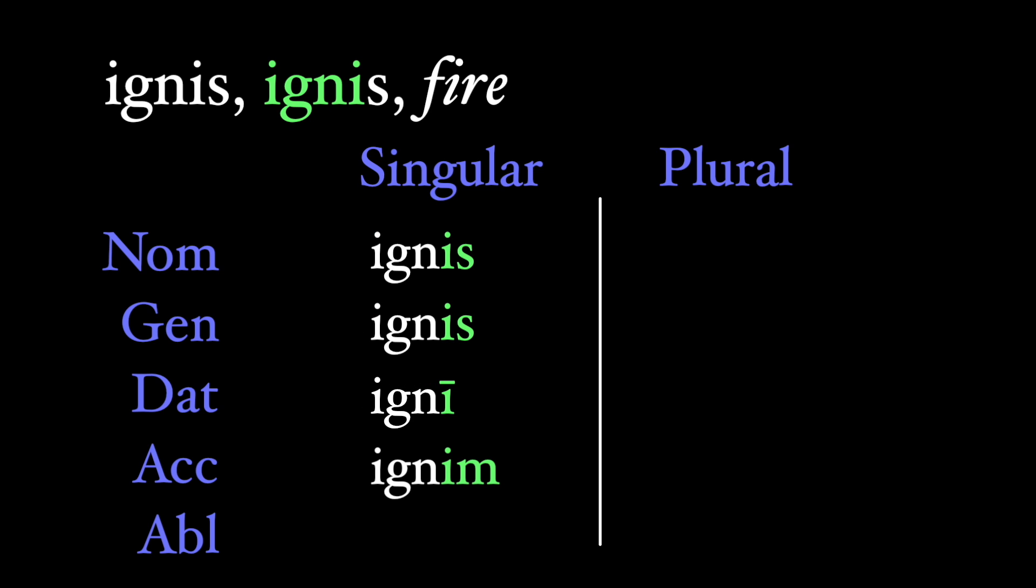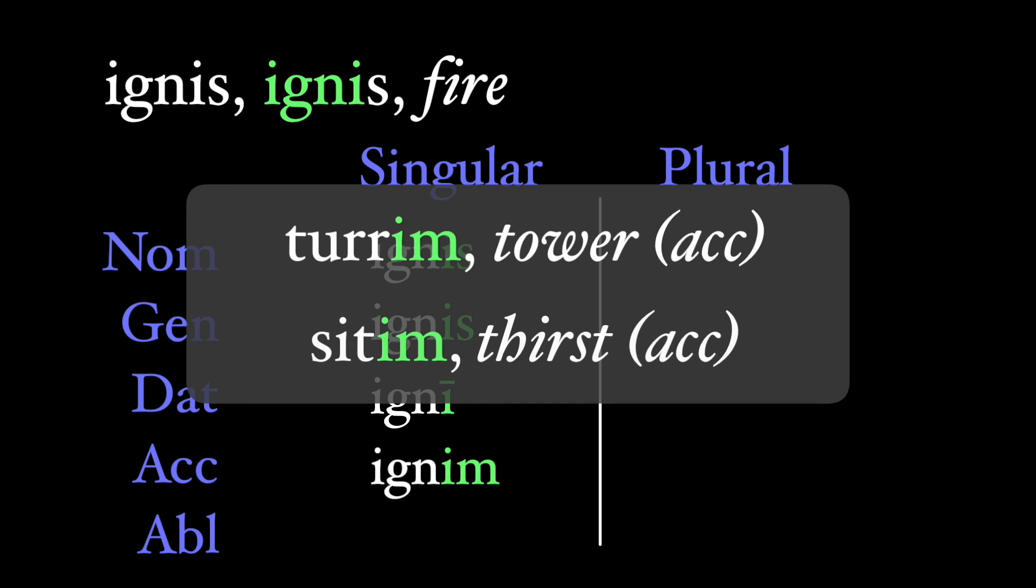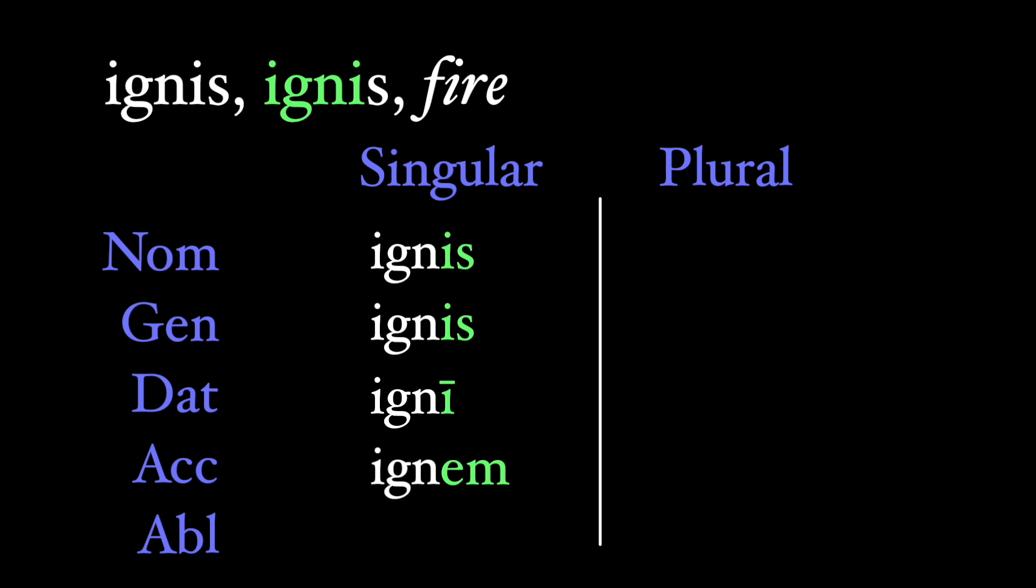The accusative singular originally was an im, so adding an M to the stem, and we still see this with several words, including turris, but over time it became replaced with a regular M from other third declension nouns. Likewise, the ablative singular was originally a long I, but this became replaced with the standard short e of the third declension consonant stems.